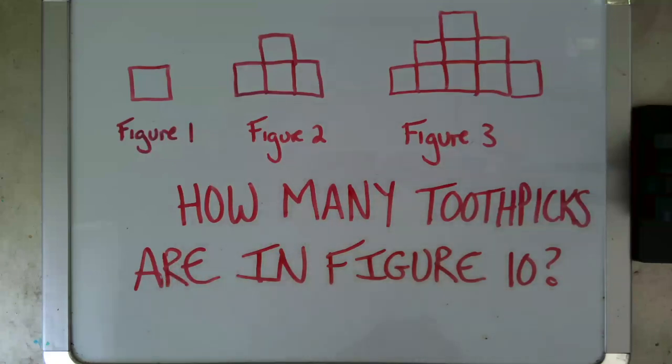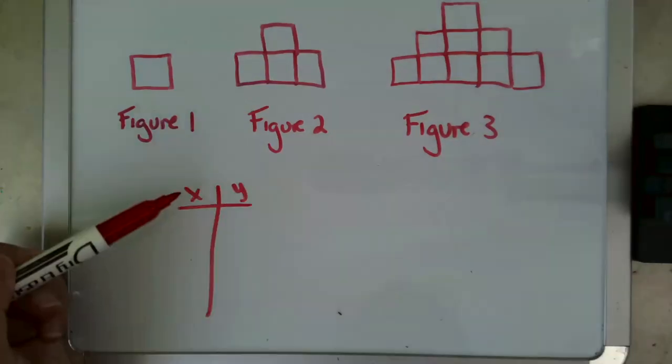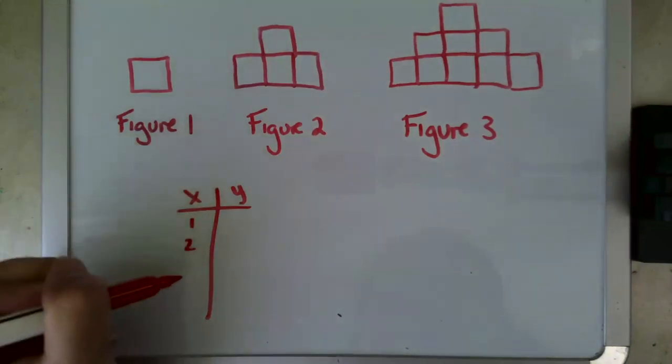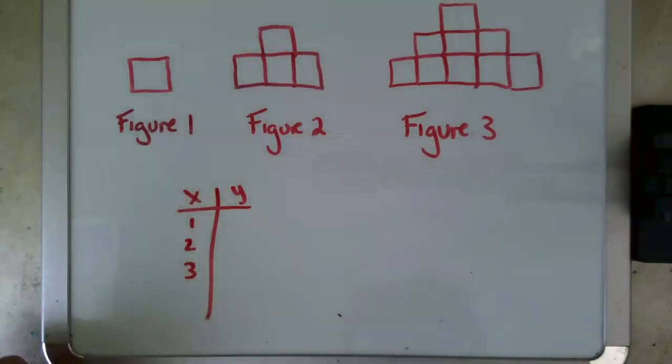So the first thing I like to do in pattern problems is I like to make a table of values and then use that to see if I can find the pattern. So if my x value is my figure number, so I've got figure one, figure two, figure three.